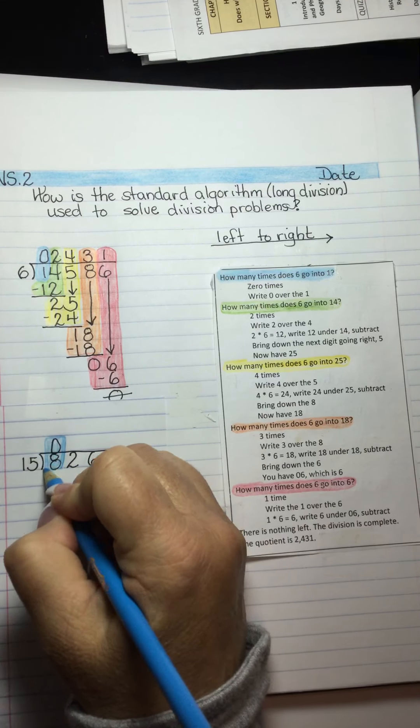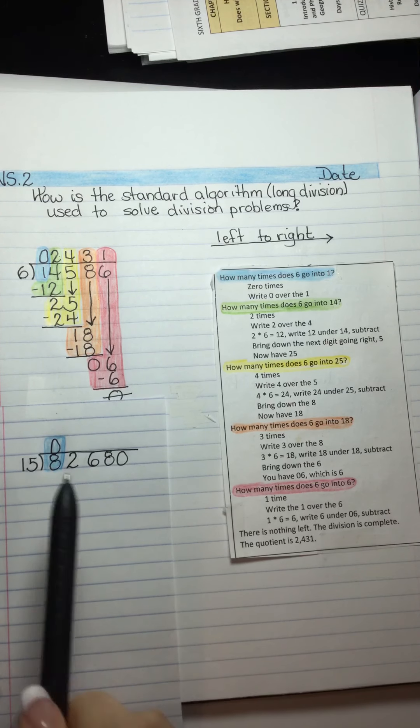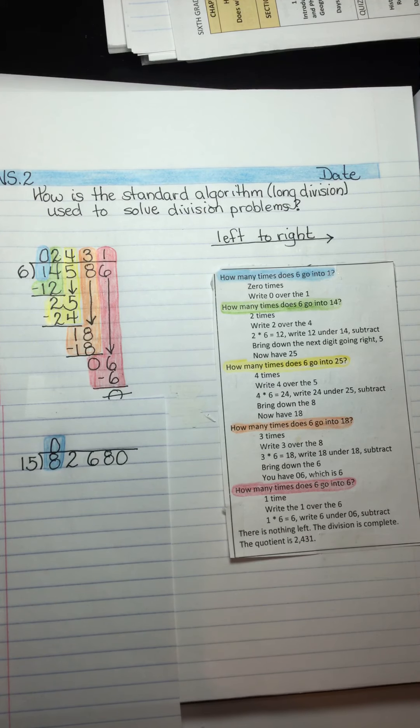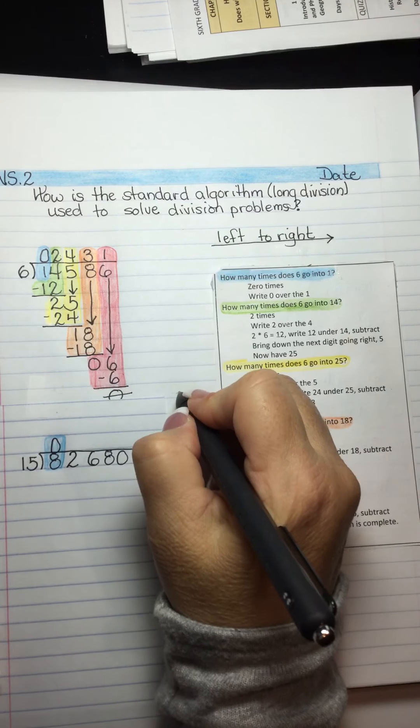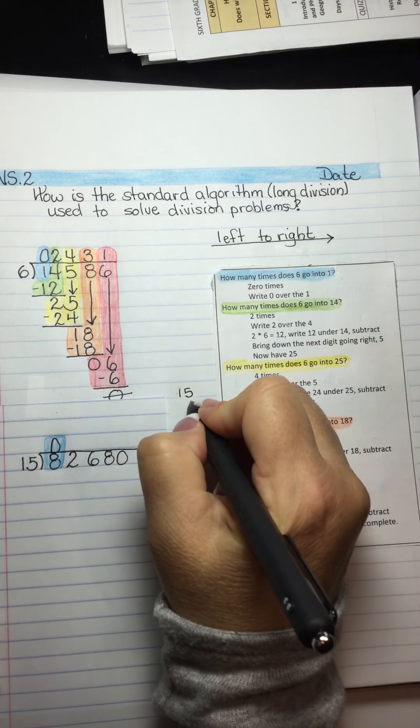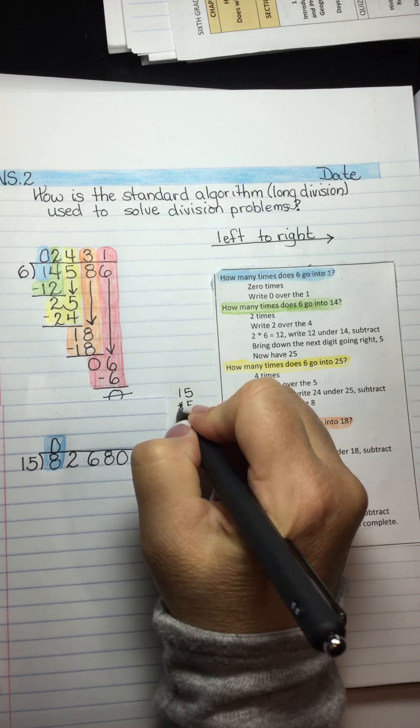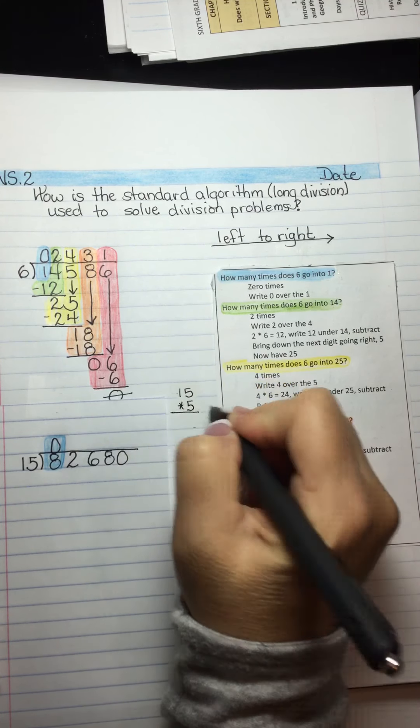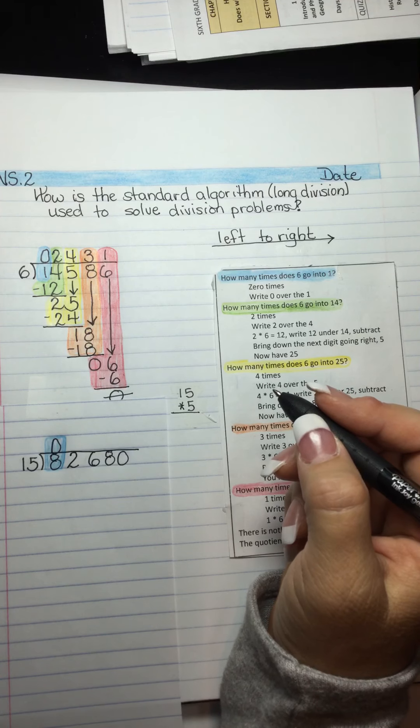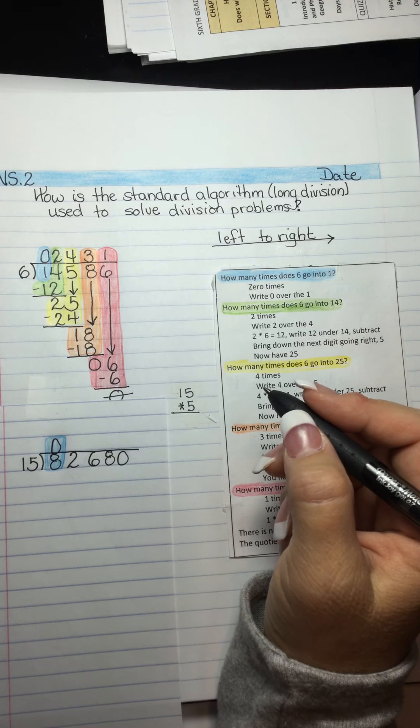Now we have 82, and we're going to ask ourselves, how many times does 15 go into 82? And I'm going to do a little what I call side math. We're going to do some multiplication and check to see what I can find that comes closest. And I'm going to start with 5 because it's right in the middle of 0 and 10.